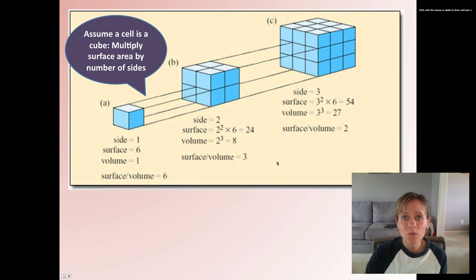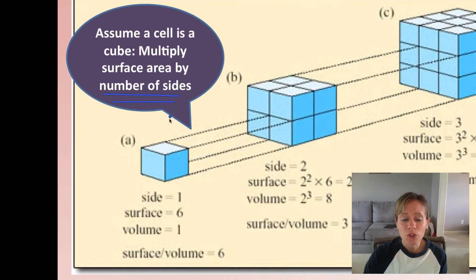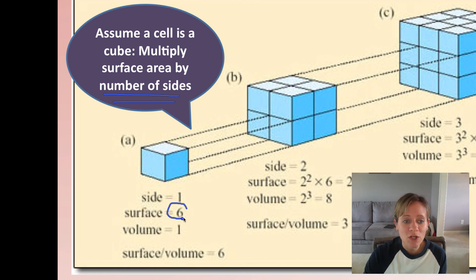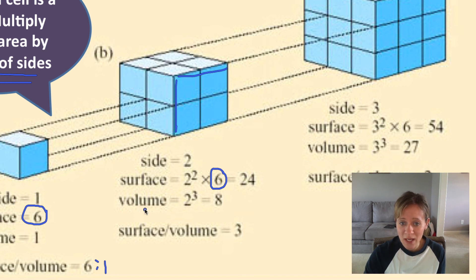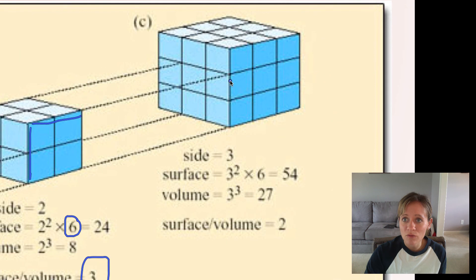Cells are not perfectly shaped, but let's assume a cell is the size of a cube. We multiply surface area by the number of sides of that cube — six sides, just like a dice. For the smallest cell, 1×1×6 gives a total surface area of 6, so the surface area to volume ratio is 6 to 1, or simply 6. For the next biggest cube with sides of 2: 2×2×6 = 24 for surface area, and 2×2×2 = 8 for volume, giving a ratio of 3. The largest cube gives a ratio of 2. We'll do an activity in class on this because doing the math together will make a lot more sense.